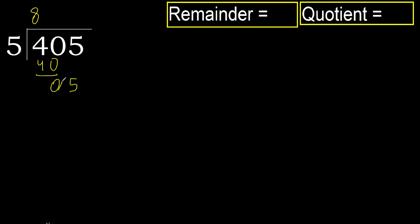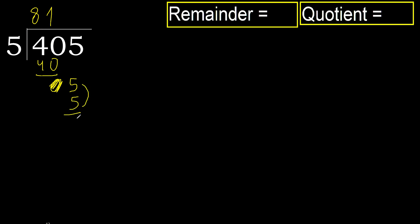Next, eliminate 0 on this side. 5 multiplied by 2 is 10, which is greater. Multiplied by 1 is 5, which is not greater. 5 minus 5 is 0.